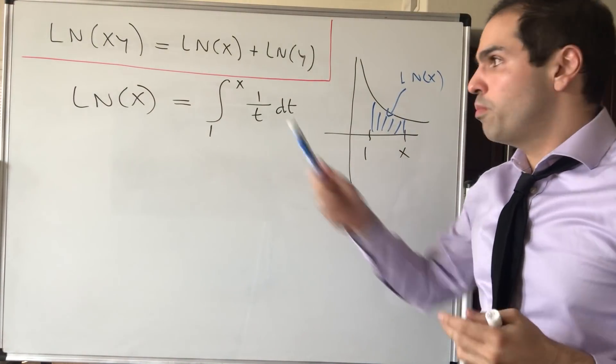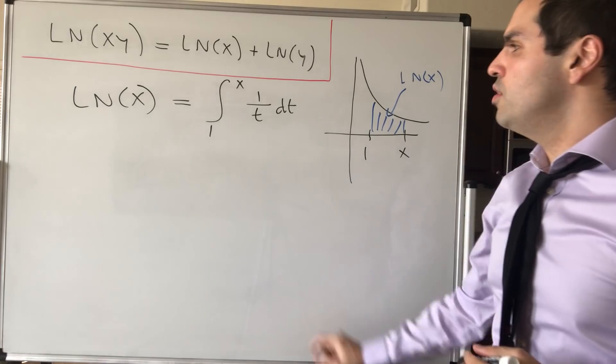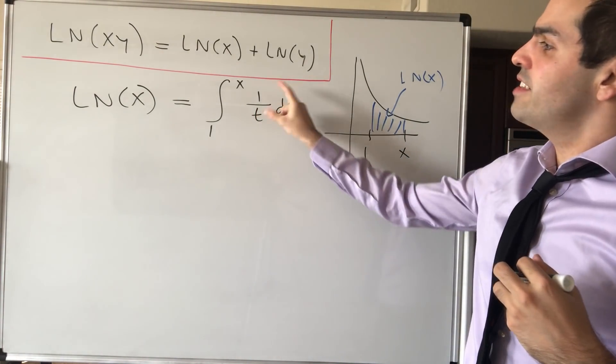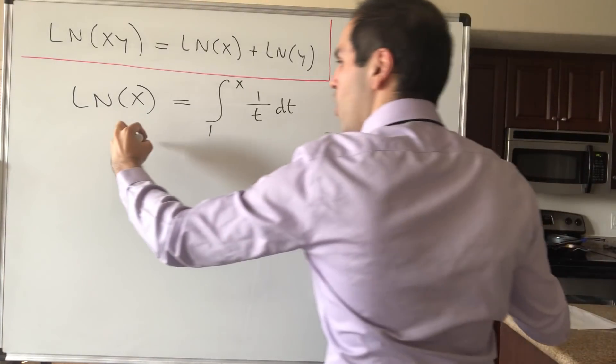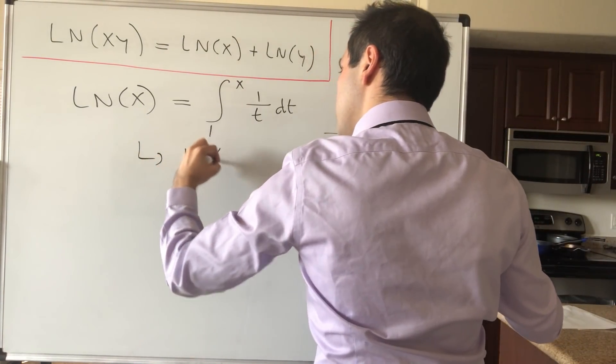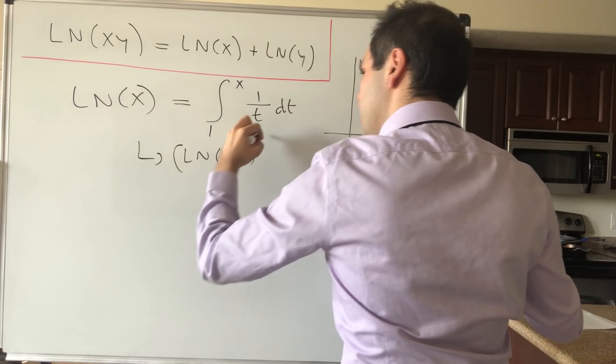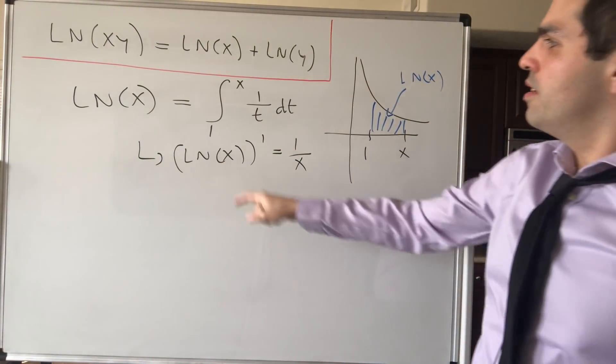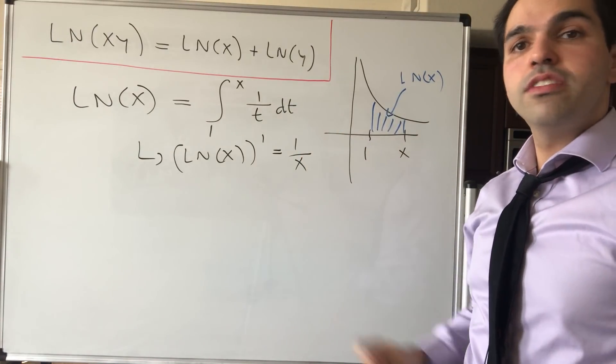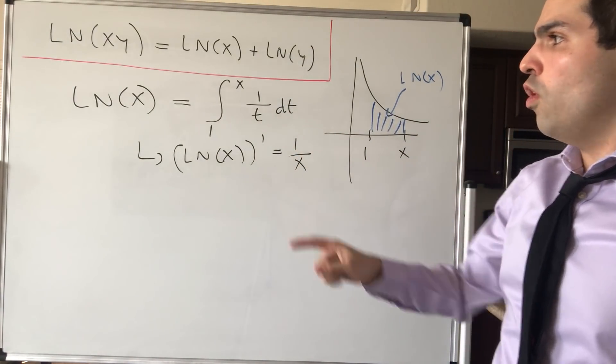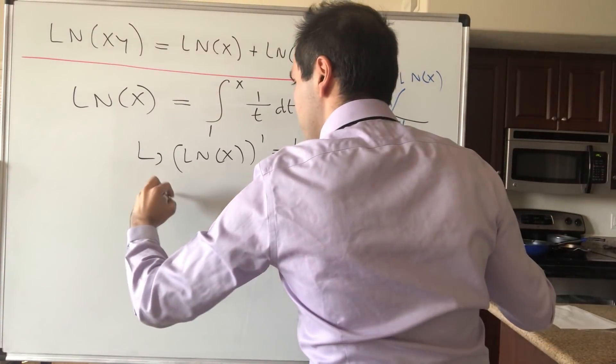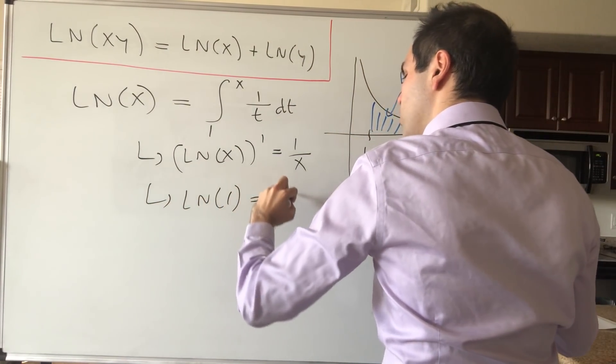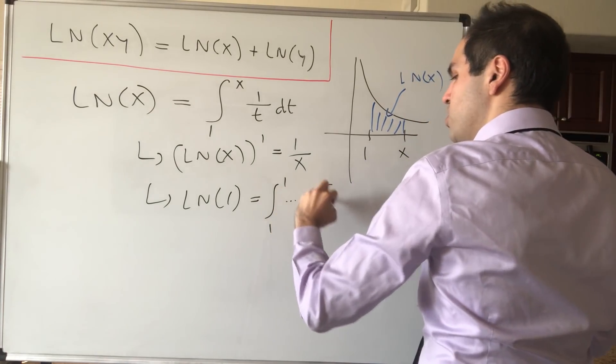Now what does that mean? There are two important things to notice. On the one hand, by the fundamental theorem of calculus, this tells you that the derivative of ln is 1 over x. The derivative of an integral is the function itself. And moreover, ln of 1, well that's the integral from 1 to 1 of this function which is just 0.